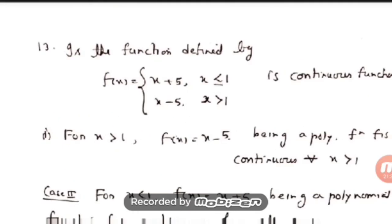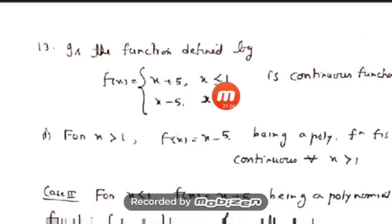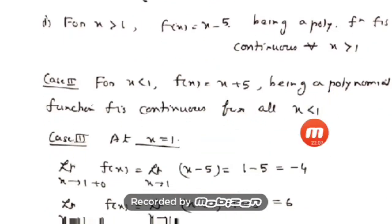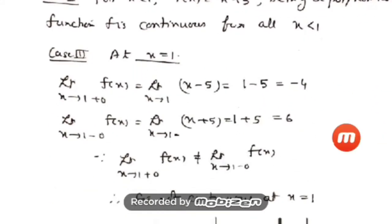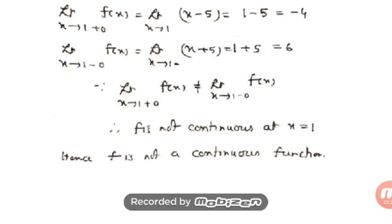Question 13: is the function defined by f(x) = x + 5 if x ≤ 1 and x − 5 if x > 1 continuous? The domain is R and 1 is the critical point. Both pieces are polynomial functions and continuous on their intervals. At x = 1: the right-hand limit using x − 5 gives 1 − 5 = −4, and the left-hand limit using x + 5 gives 1 + 5 = 6. Since −4 ≠ 6, the limit does not exist and f is not continuous at x = 1. So the function is not continuous — x = 1 is the point of discontinuity. Thank you.